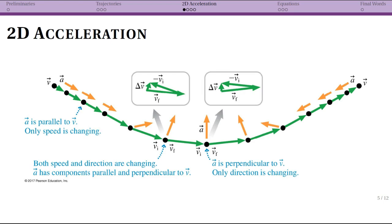Now I want to talk about two-dimensional acceleration. In chapter one we typically dealt with situations where each part of our motion could be simplified down to one-dimensional motion. Now we're talking about motion that is inherently two-dimensional, and we get some new ideas because of that.